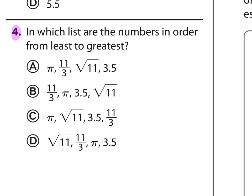Number 4. In which list are the numbers in order from least to greatest? So they all use the same numbers, so let's just go through and change them all to decimals. So we'll start with pi, it's about 3.14. We know that's an approximation, not exact, but it's about, it's not exactly 3.14. Then 11 thirds, so we'll just go to a calculator and say 11 divided by 3, and I get 3.6 repeating.